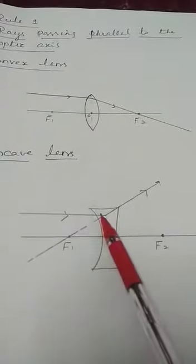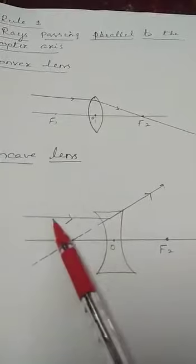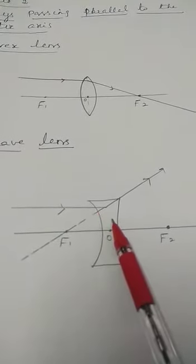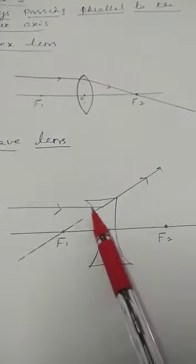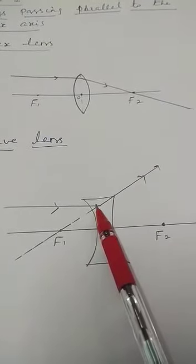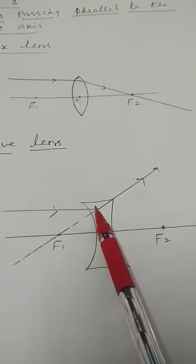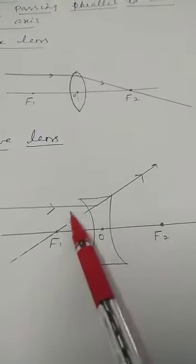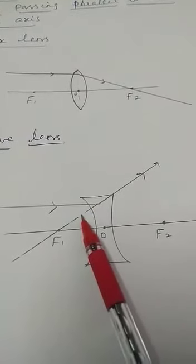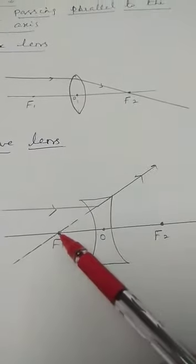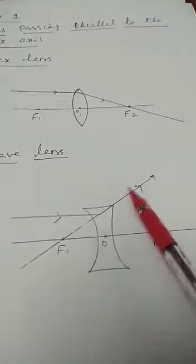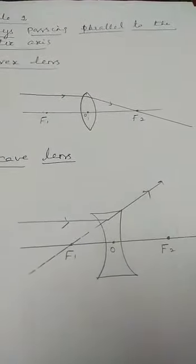For a concave lens, when parallel rays strike the concave lens, the refracted rays appear to diverge from the principal focus. So a concave lens causes divergence, while a convex lens causes convergence.